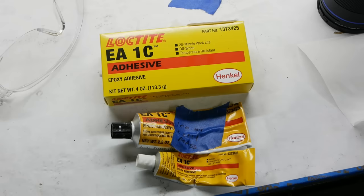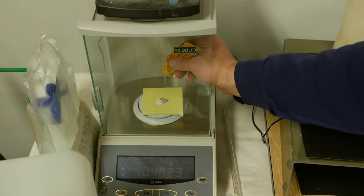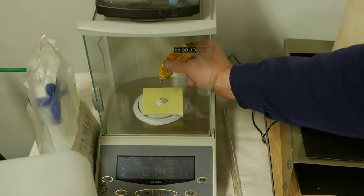I used Hysol 1C, which is a special kind of epoxy that's made for high vacuum applications. It's actually really high quality epoxy that you can use for all kinds of things. I bought it on Amazon for about fifteen dollars.